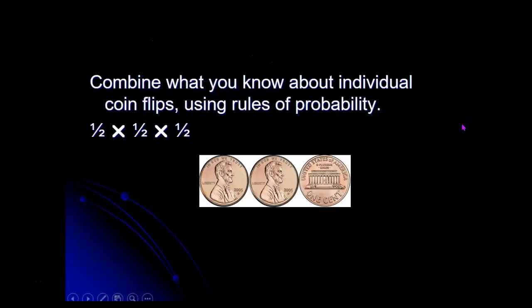And then another approach would be to combine what you know about individual coin flips using the rules of probability that we are going to be talking about in this chapter. So for example, for each individual coin, if it's a fair coin with heads on one side and tails on the other, then flipping that one coin, you have a one-in-two chance, a one-half probability of that coin coming up heads.